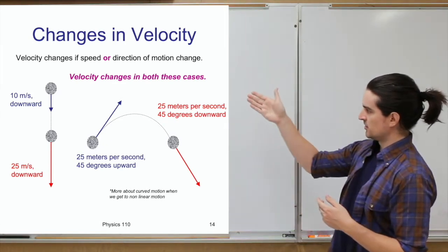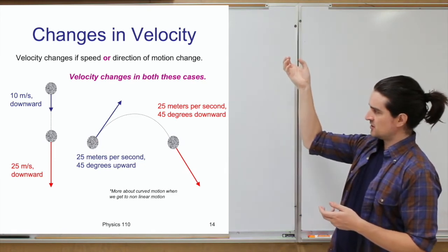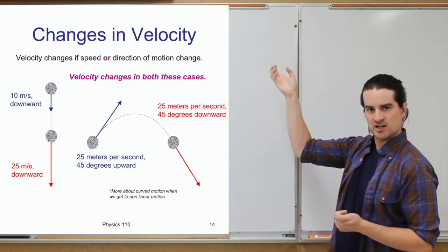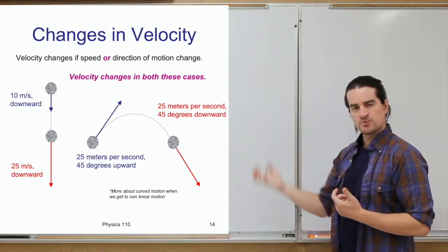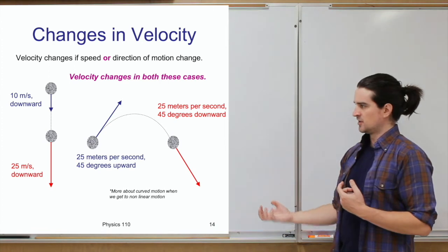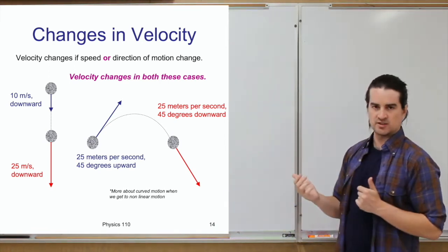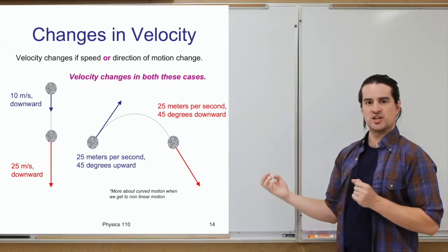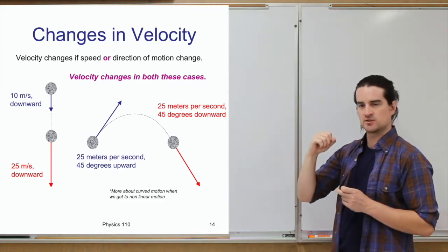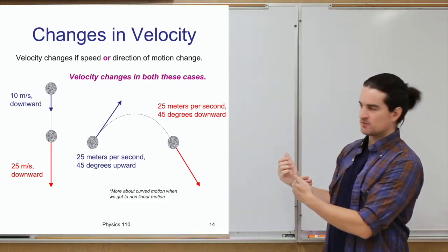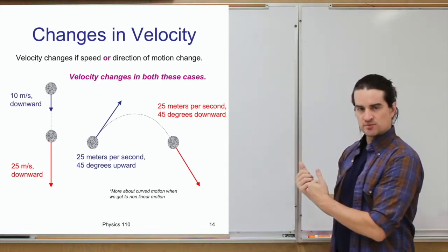On the left side, an object falling starts at 10 meters per second downward, and a little later is moving at 25 meters per second — still downward, same direction, but its speed has changed. That's one example of changing velocity. On the right, an object moving at 25 meters per second changes direction — its speed stays the same, but its direction changes, so the velocity has changed.